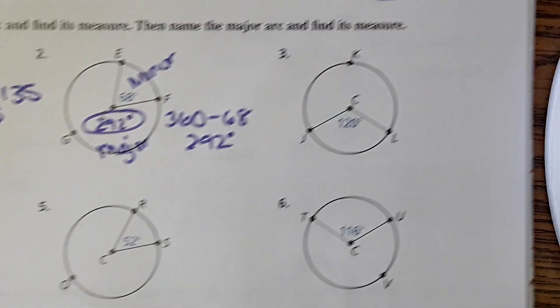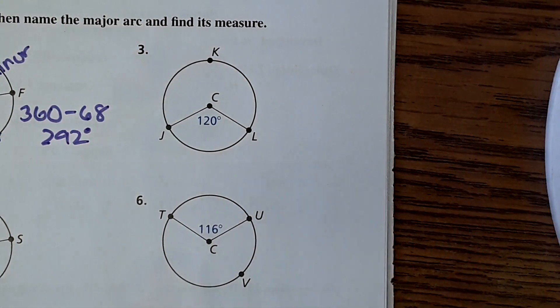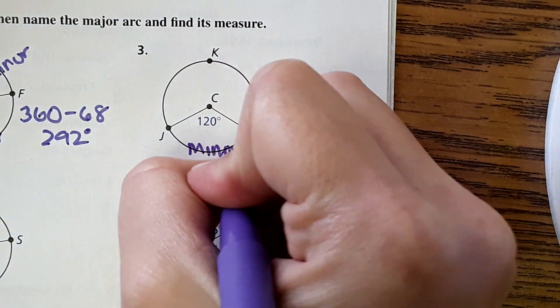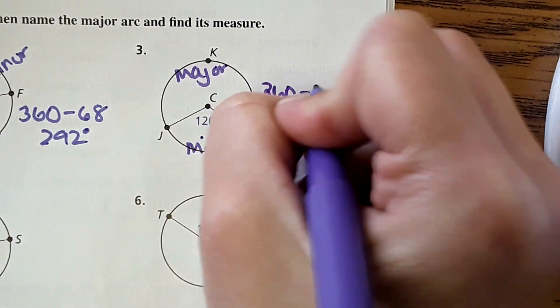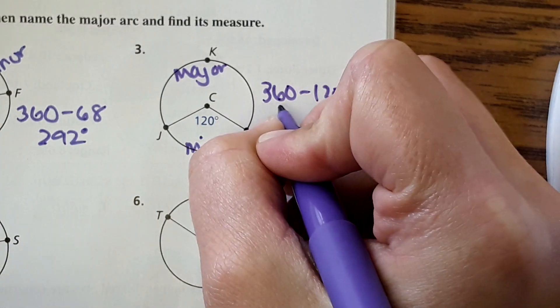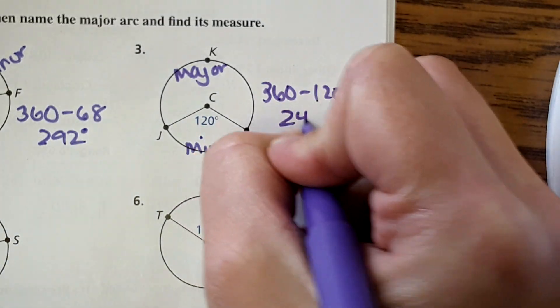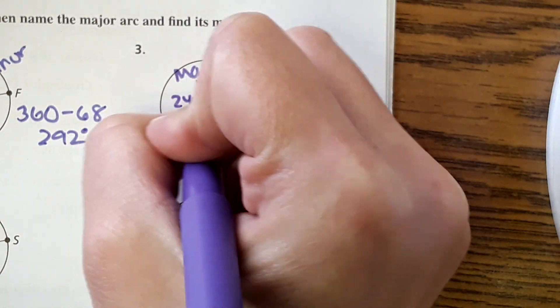Number three, again same process. Minor, major. 360 minus 120 gives us 240 degrees, so this is 240 degrees.